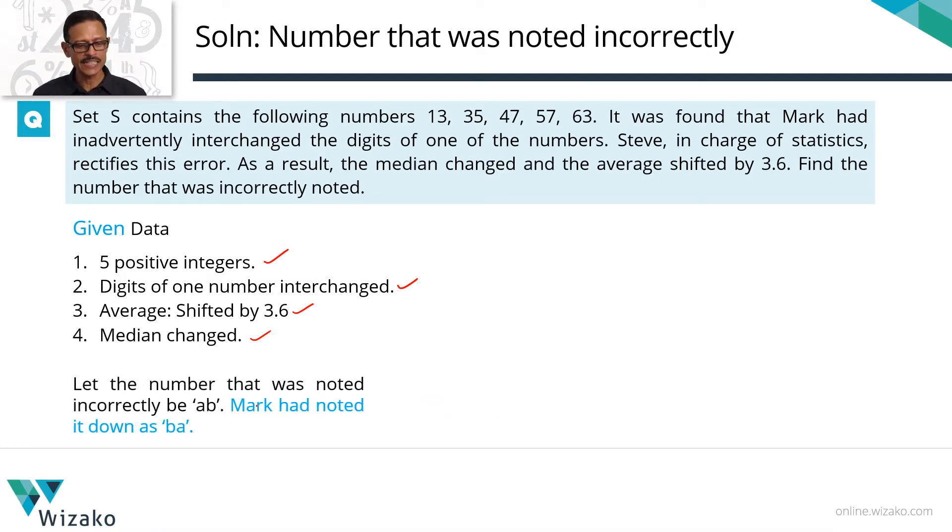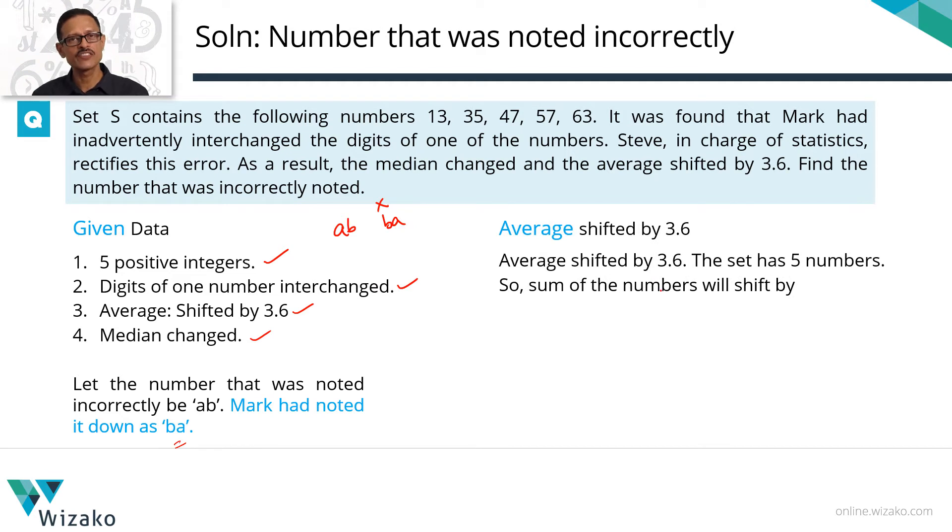Let's say the number that he noted down incorrectly is AB. So he wrote it as BA. The right version, the correct version is AB. The incorrect version is BA. What is the first piece of data that we have? The average shifted by 3.6. How many numbers are there? There are five numbers. Five numbers, the average shifted by, let's say the correct average is A. The average has actually become A plus or minus 3.6 is what has happened. So what will be the sum of the five numbers, the correct version, that would have been 5A. The incorrect version, the sum is number into average, which is 5A plus or minus 18. So the sum of the numbers is going to shift by five times the change in the average. So the difference between the correct sum of the five numbers and the incorrect sum is equal to 18.